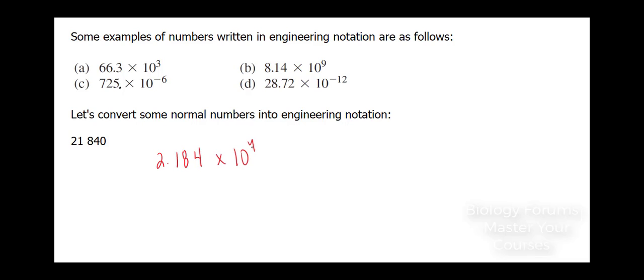This is what it would look like in scientific notation, but it does not work if we want to convert it into engineering notation. The reason why is because 10 to the power of 4 is not a multiple, 4 is not a multiple of 3. 6 is a multiple of 3, 3 is a multiple of 3, 9 is, but not 4. So what we can do is we can make it into 21.84 times 10 to the power of 3, and that will give you the original number. So this right here is the correct answer.